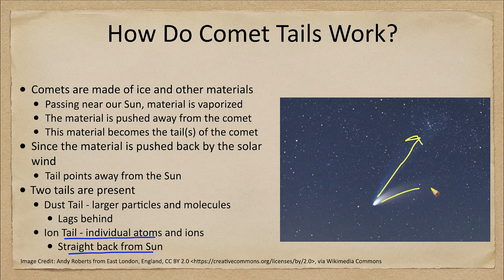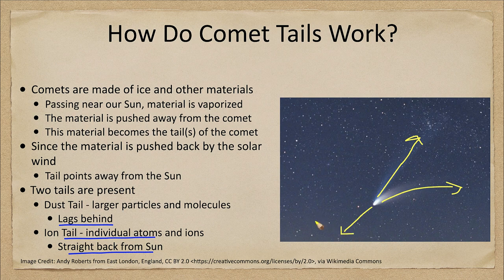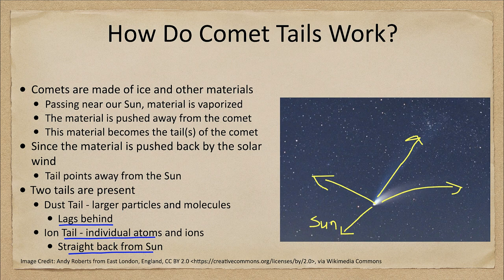On the other hand, the dust tail consists of somewhat larger particles and therefore it lags behind in the orbit. So just from looking at this image we know the Sun is off in this direction. We also know that the direction of motion of the comet is off in this direction, because we know that these particles are lagging behind. So just from looking at the comet and tails we can get those two pieces of information.